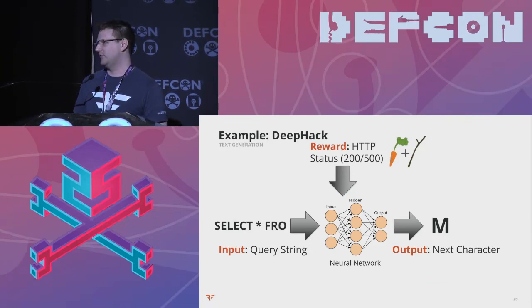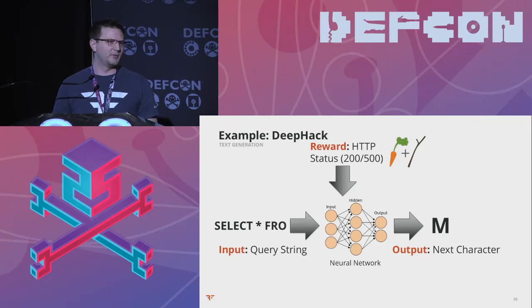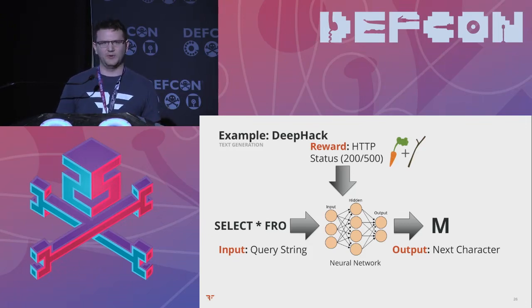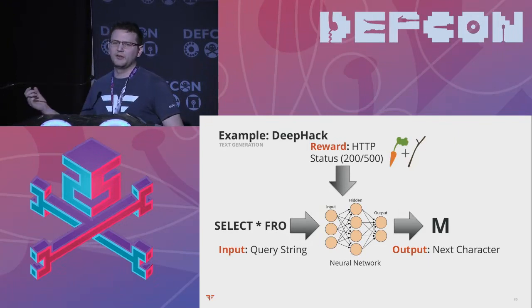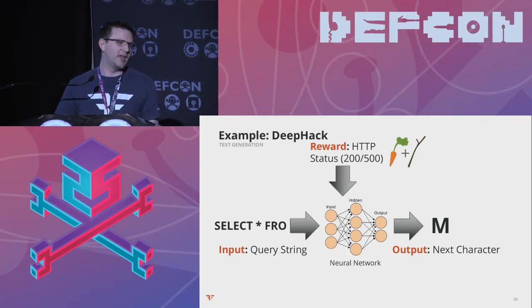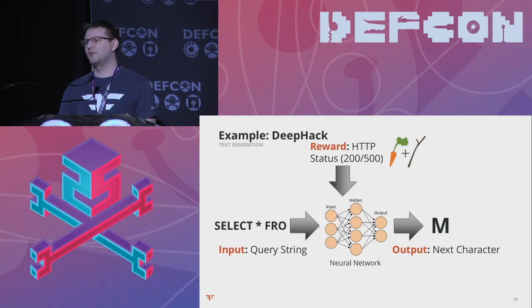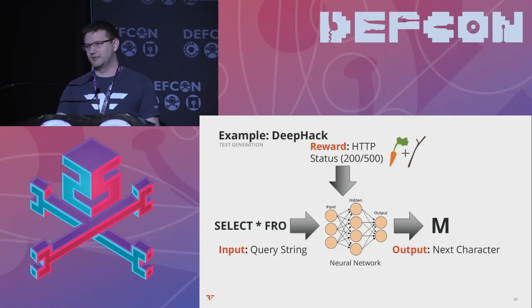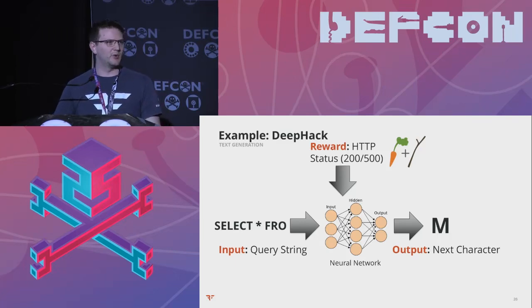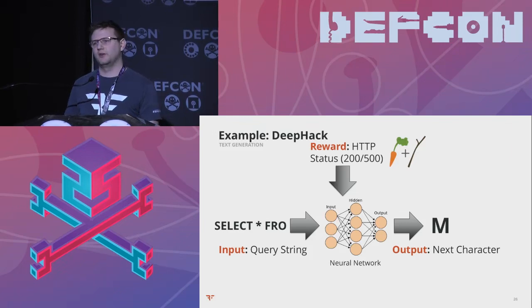If you're looking at the example, it says 'SELECT * FRO' and even in the audience you'd probably think M makes sense — 'SELECT * FROM.' You take that M, stick it onto the end of the query string, and repeat this iteratively. In terms of rewards, how does it know if it did something right or wrong? It's based on the output from the remote server. All we have are the Boolean-based responses: did this give us a 200 or a 500? Is that data correct or incorrect? Entirely from that basis we can figure out whether the string is present in the database or not.